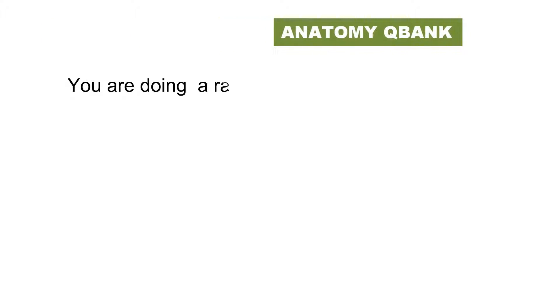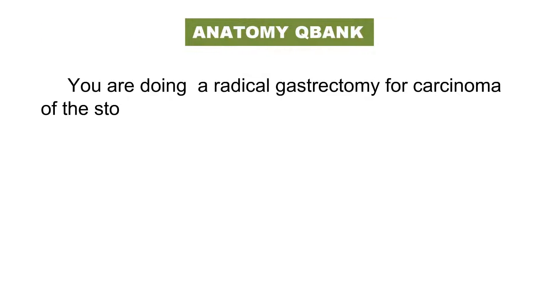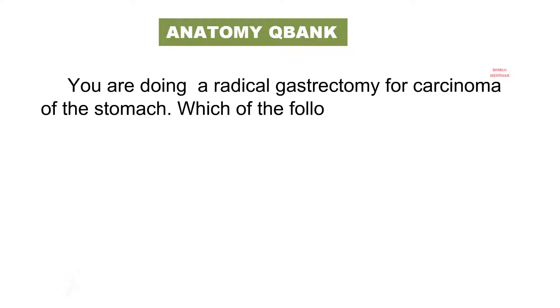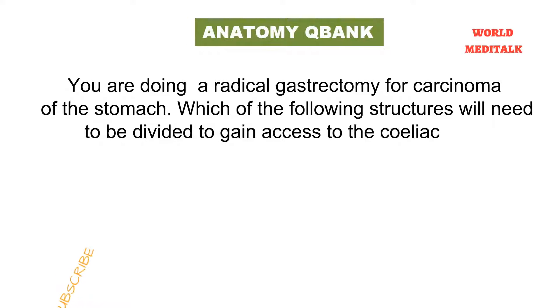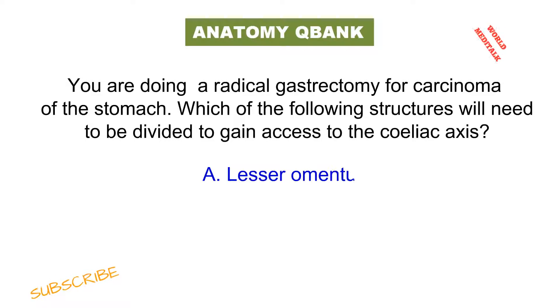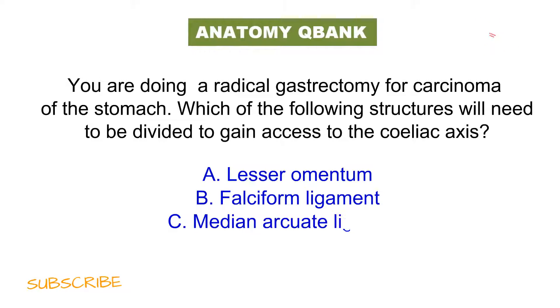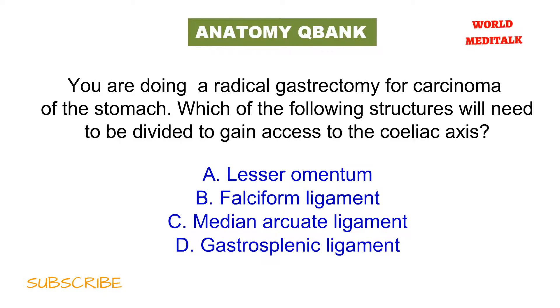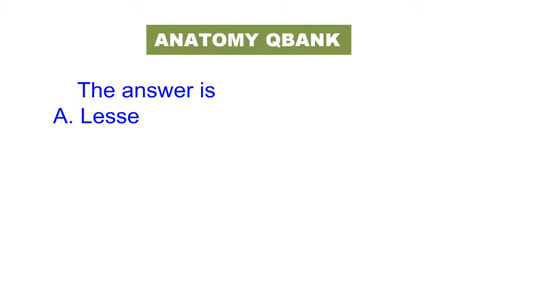You are doing a radical gastrectomy for carcinoma of the stomach. Which of the following structures will need to be divided to gain access to the celiac axis? The lesser omentum, falciform ligament, median arcuate ligament, or gastrosplenic ligament?